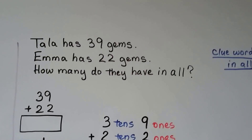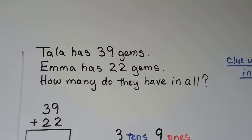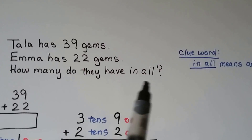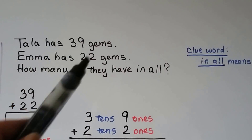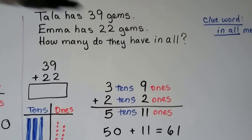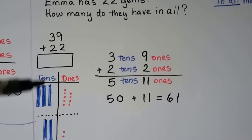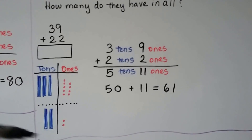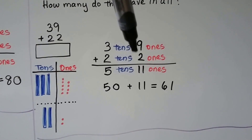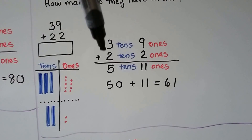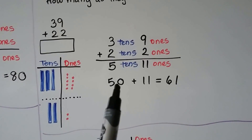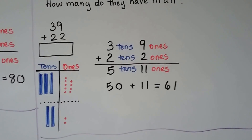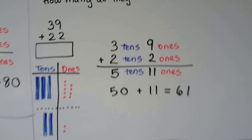Let's try another one. Tala has 39 gems. Emma has 22 gems. How many do they have in all? We look for our clue words — 'in all' means we need to add. This is going to be an addition problem. We have 39 plus 22. We have three tens and nine ones, and we're adding two tens and two ones. We stack the ones and the tens. Nine plus two is equal to 11 ones. Three tens plus two tens are five tens. Five tens makes 50. We add our 11 ones. It is equal to 61. So 39 plus 22 is equal to 61.